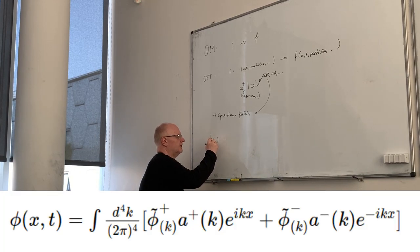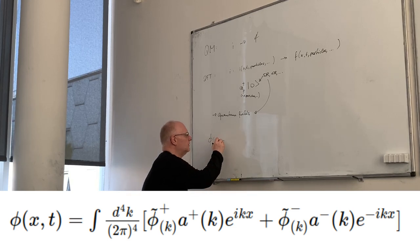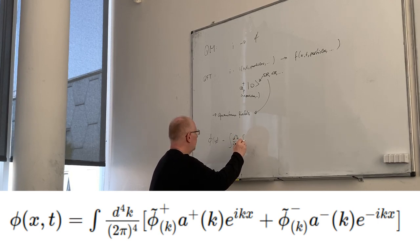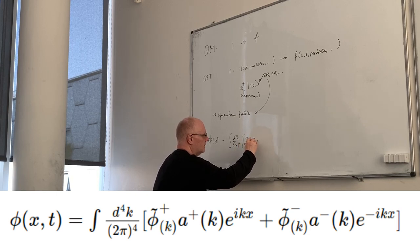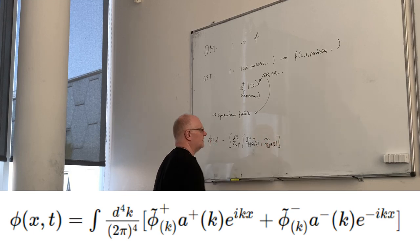A scalar field, phi of X and T. I can also write only X because I have a four-vector, so T is included. X equals CT, and then I can write it down as just a Fourier integral, d to the 4k over 2π to the fourth. Now my amplitude, phi tilde plus A dagger, and this is now of K, A dagger of K, plus phi tilde minus A of K.